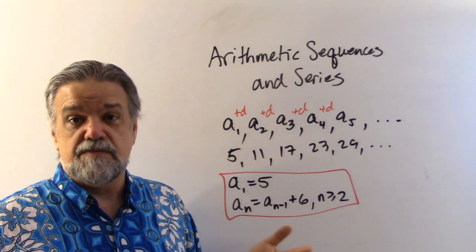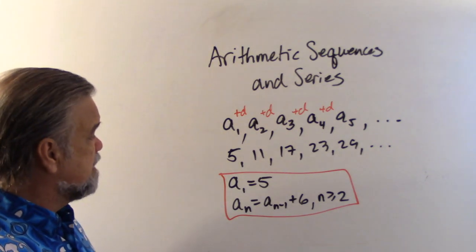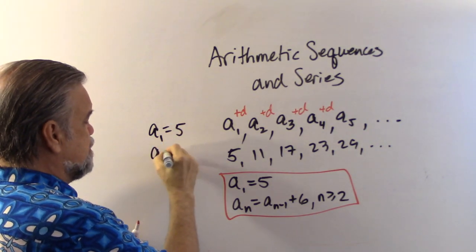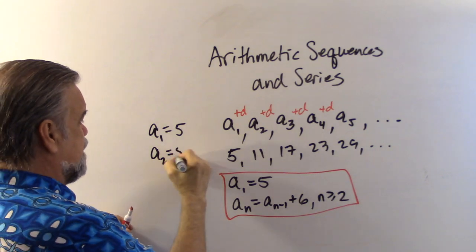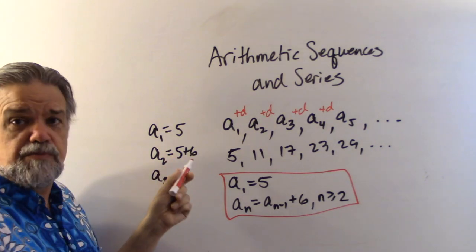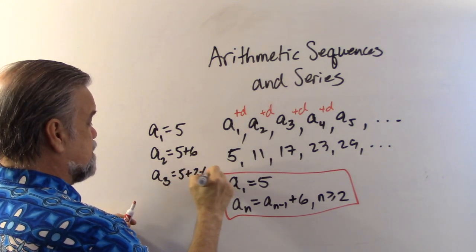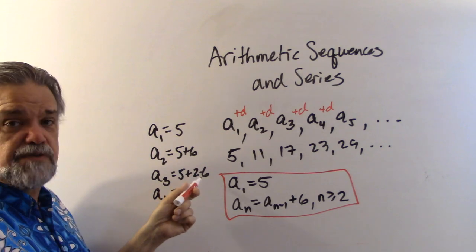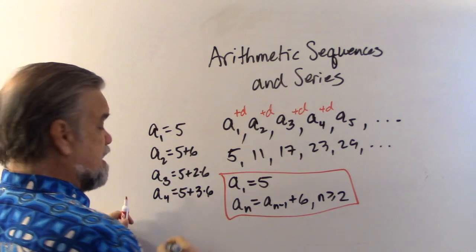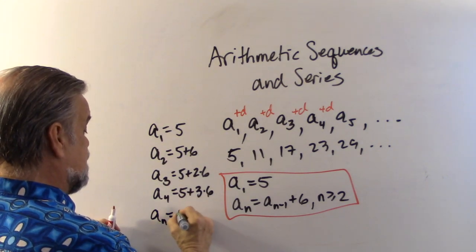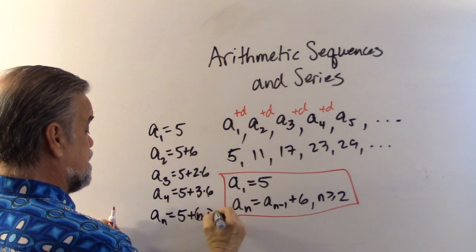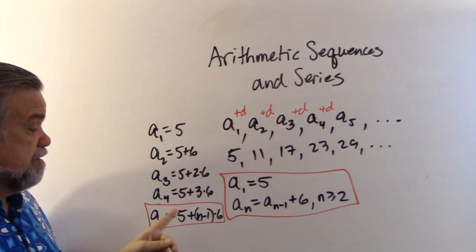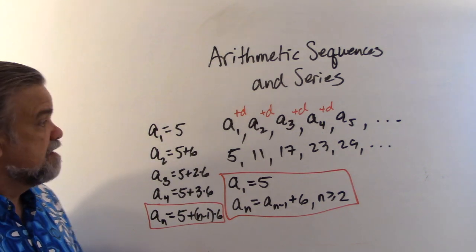Or if you want to write an explicit form for this sequence, well, let's see. A one is five. A two is going to be five plus six, right? A three is going to be a two plus six. So that's five plus two times six. A four is going to be a three plus six. So that's five plus two times six plus six. So that's five plus three times six. And so we see that a n will be five plus n minus one times six. And that is our explicit way of writing what the sequence is. So explicit form, recursive form, they both define the sequence pretty darn well.